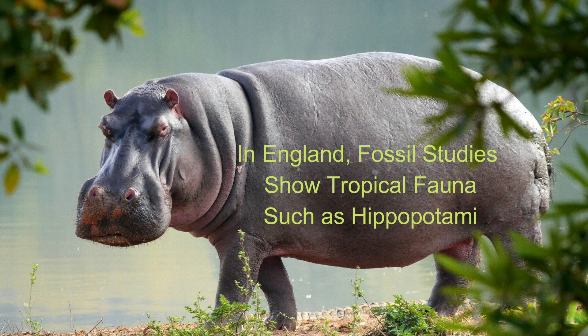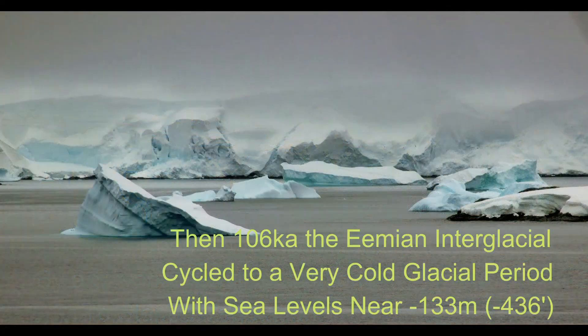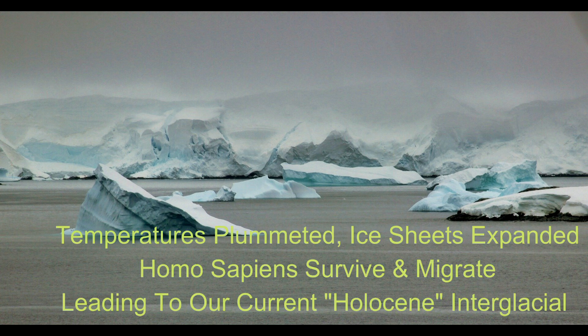The Sahara Desert was constituted by a savanna which transitioned to stepped vegetation. Then, 106,000 years ago, the Eemian interglacial cycled to a very cold glacial period with sea levels near negative 133 meters. Temperatures plummeted, ice sheets expanded, Homo sapiens survived and migrated, leading to our current Holocene interglacial.